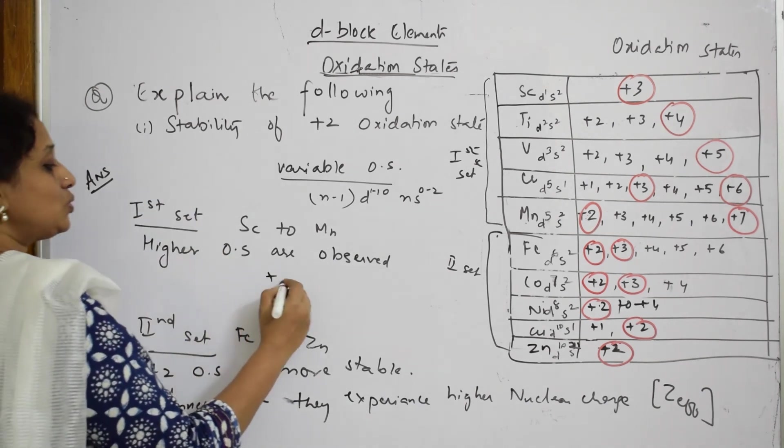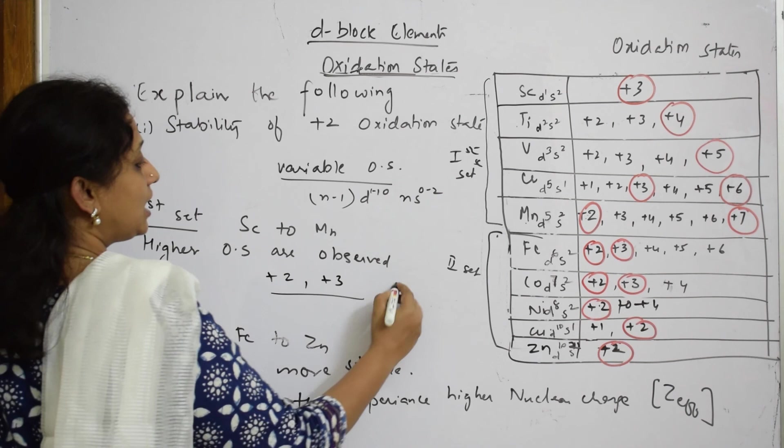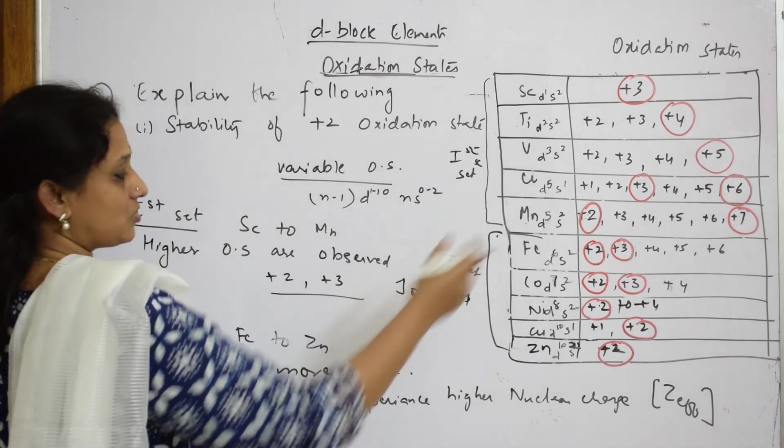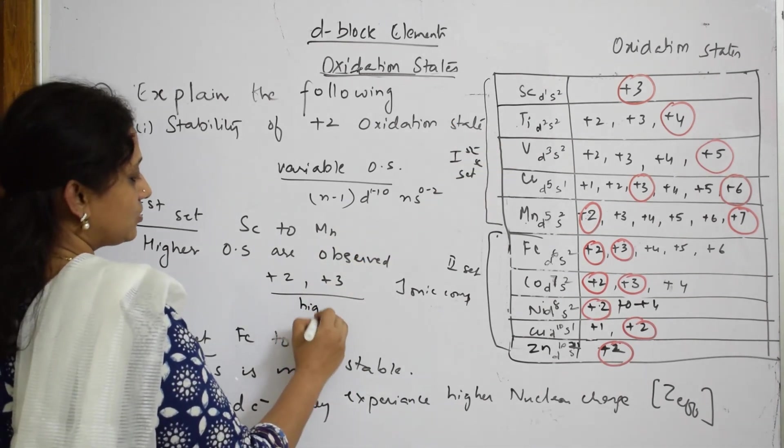So that is the reason here higher oxidation state and this is lower oxidation state. Now one more important thing you have to remember: +2 and +3 oxidation states, whichever are showing, are always ionic compounds they form.